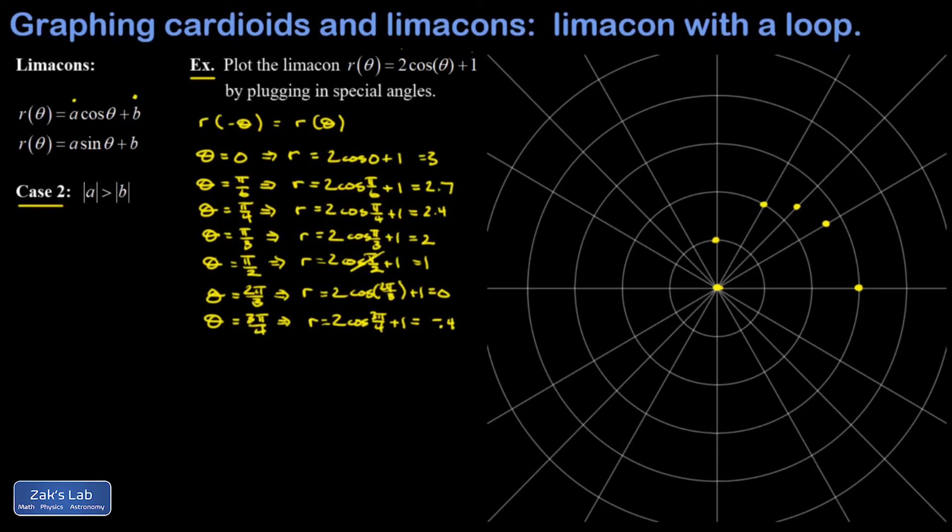I'll hit the fast forward button for the rest of these. All right, quick time out. We just got our first negative value of r at θ = 3π/4, and my value is r = -0.4. So I'm going to aim in the direction of 3π/4 but step backwards by 0.4 units and I land right here.